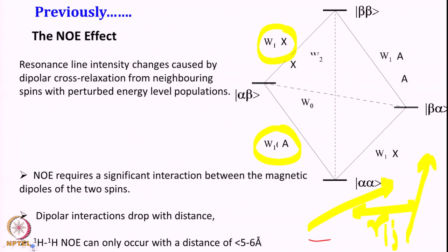Resonance line intensity change can be caused by dipolar relaxation from the neighboring spin with the perturbed energy level of one spin. So here we have spin A and spin X. If you are perturbing spin A, the effect of that perturbation will be seen on spin X. For this effect to be seen, they have to be interacting through space.